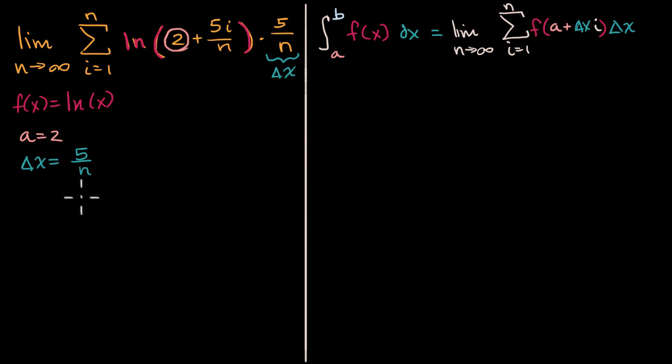So what can we tell so far? Well, we could say that the original thing is going to be equal to the definite integral. We know our lower bound is going from two to we haven't figured out our upper bound yet. We haven't figured out our b yet. But our function is the natural log of x. And then I will just write a dx here.